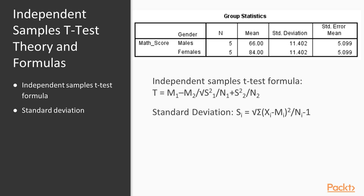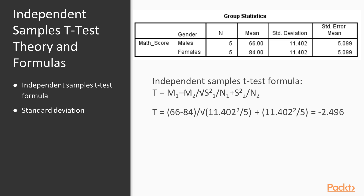We divide the difference in means by the square root of your standard deviation squared divided by the number of cases. Standard deviation captures the variation within each group — it's the score minus the mean, squared, summed up, divided by degrees of freedom (n minus one), then square root of all that. So in this example, taking 66 minus 84 and dividing by the pooled standard error, we come up with a t-score of approximately negative 2.5.